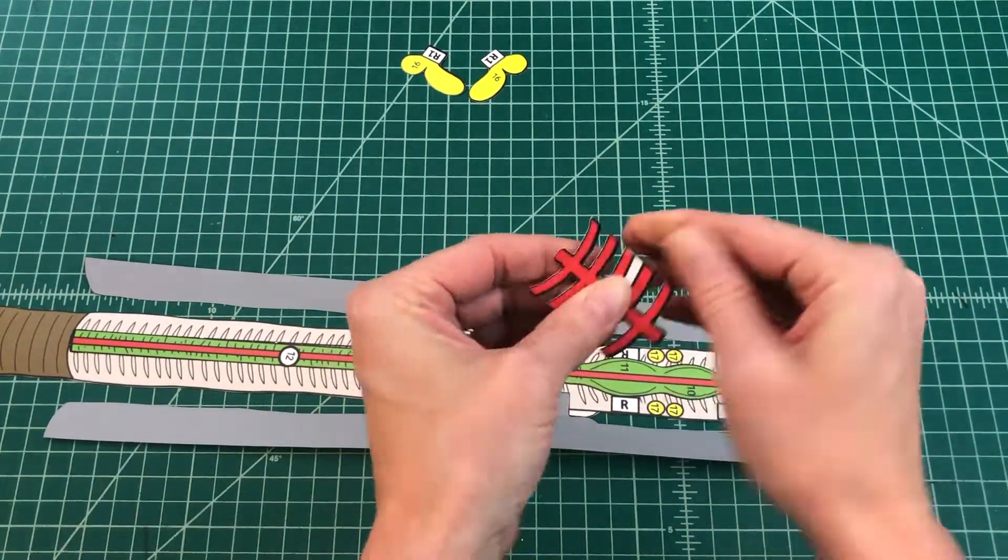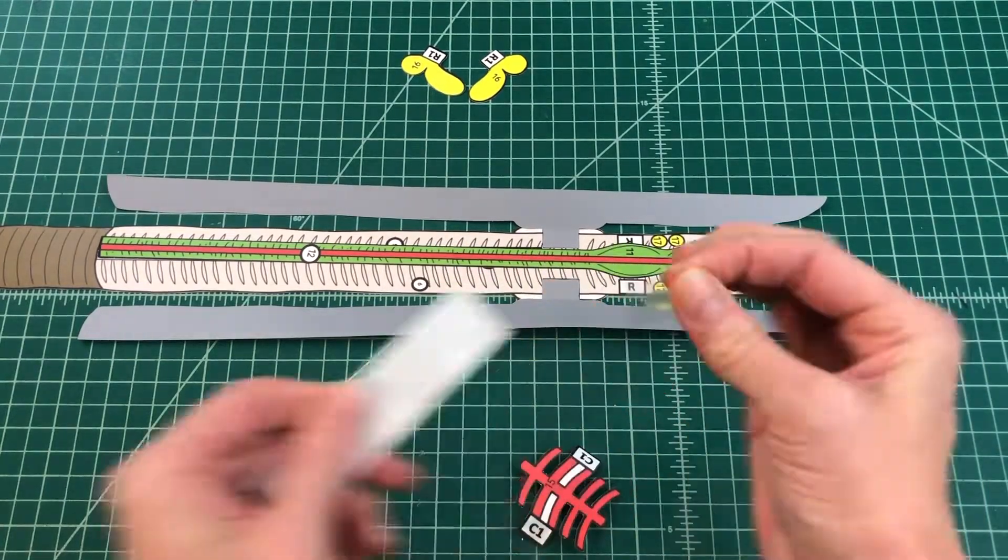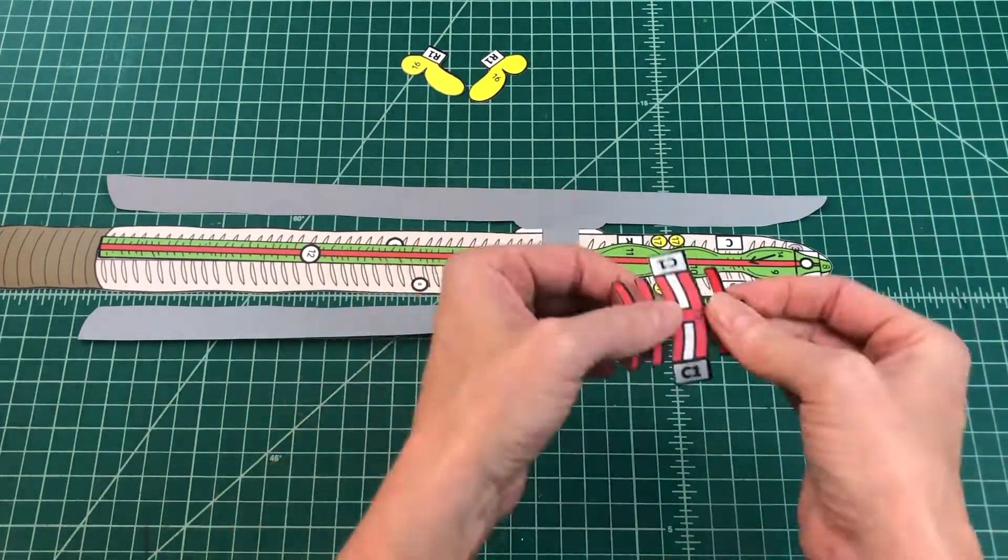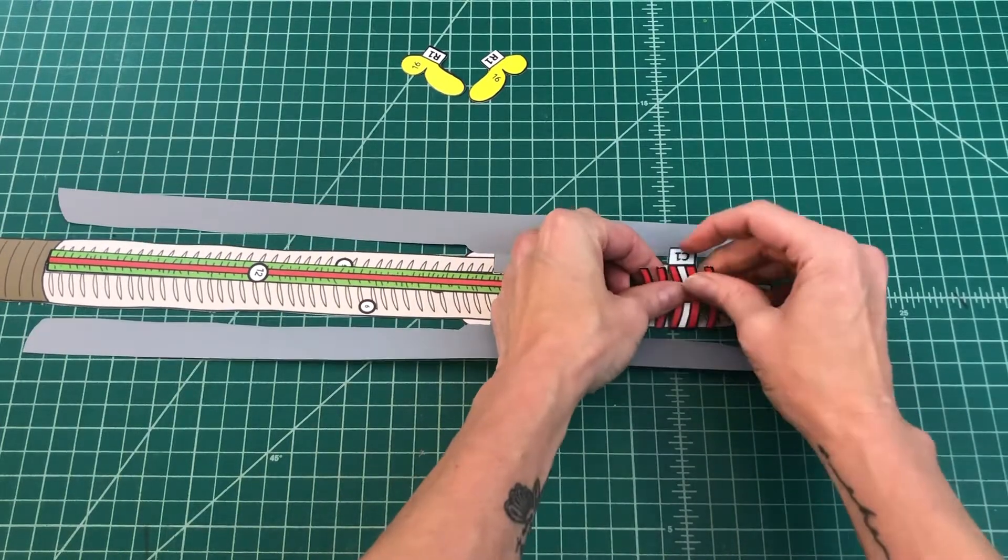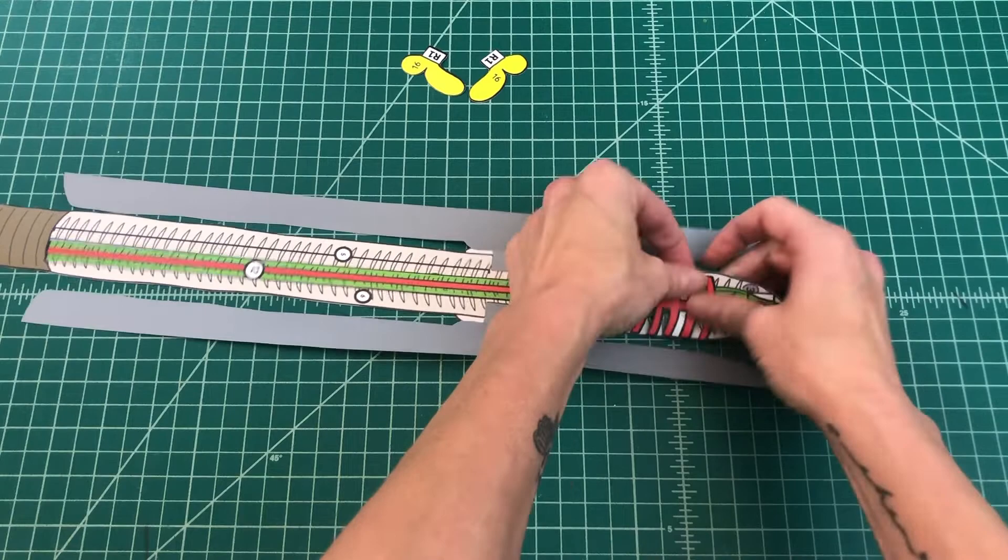Number four: Apply glue to the top of the tab C1 and fold it under. Attach the aortic arches by tab C1 over C on the internal worm. You should not be able to see the tab when applied correctly.